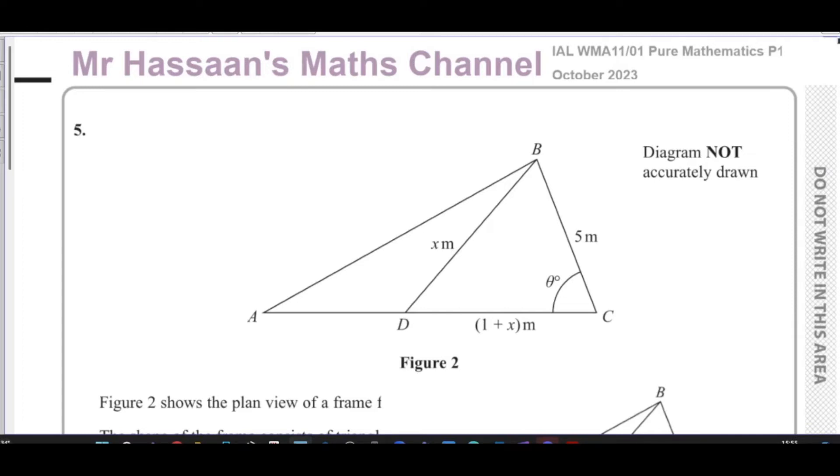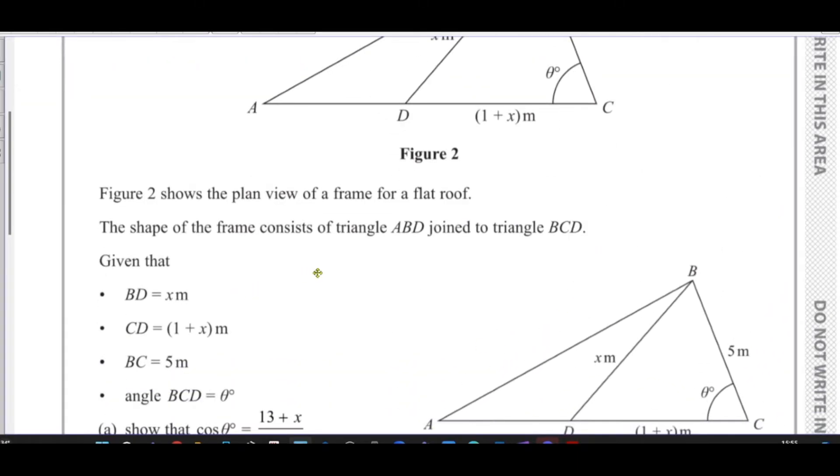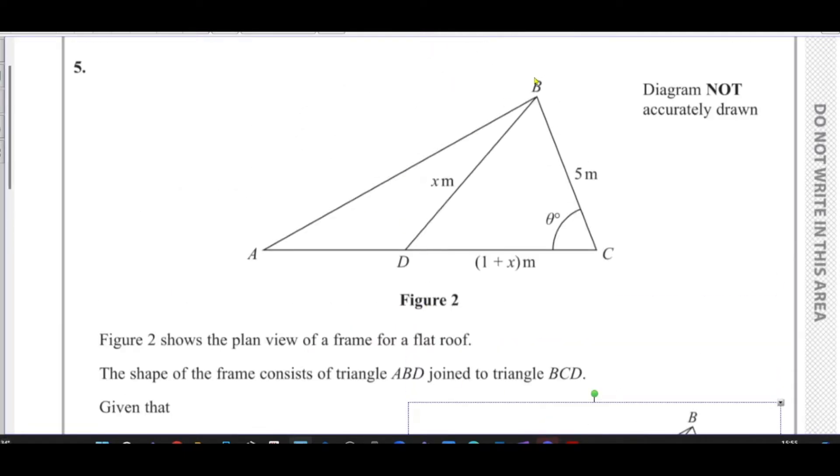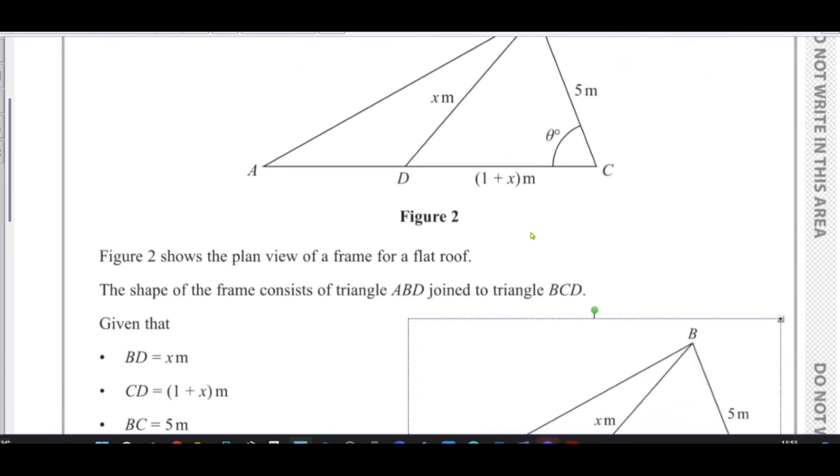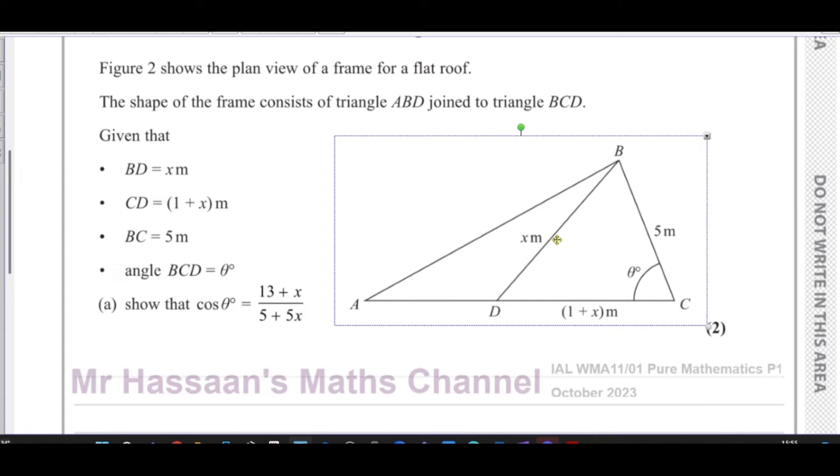Welcome to Hassan's Math Channel. I'm now answering question number five from the October 2023 Pure Mathematics P1 International A-Level Excel paper. This question is about the plan view of a frame for a flat roof. The shape of the frame consists of triangle ABD joined to triangle BCD. Given that BD equals x meters, CD equals 1 plus x meters, BC equals 5 meters, and angle BCD equals theta degrees.